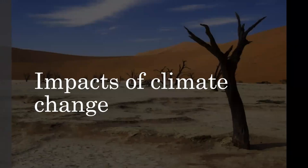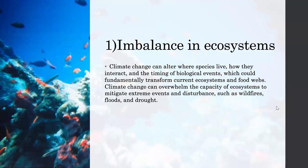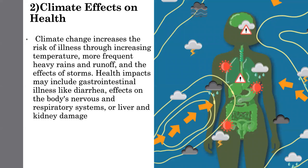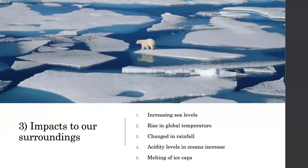Now we'll be looking at the impacts of climate change. Firstly, climate change can bring an imbalance to the ecosystem, as it alters the way species live and forces them to mitigate extreme events and disturbances. Next, climate change can increase the risk of health impacts such as diarrhea, effects on the body's nervous and respiratory system due to the increase of temperature, rainfall and the effects of storms. We'll also look at impacts to our surroundings such as an increase in sea levels, rising global temperatures, changes in rainfall, the increase of acidity levels in oceans and the melting of ice caps.